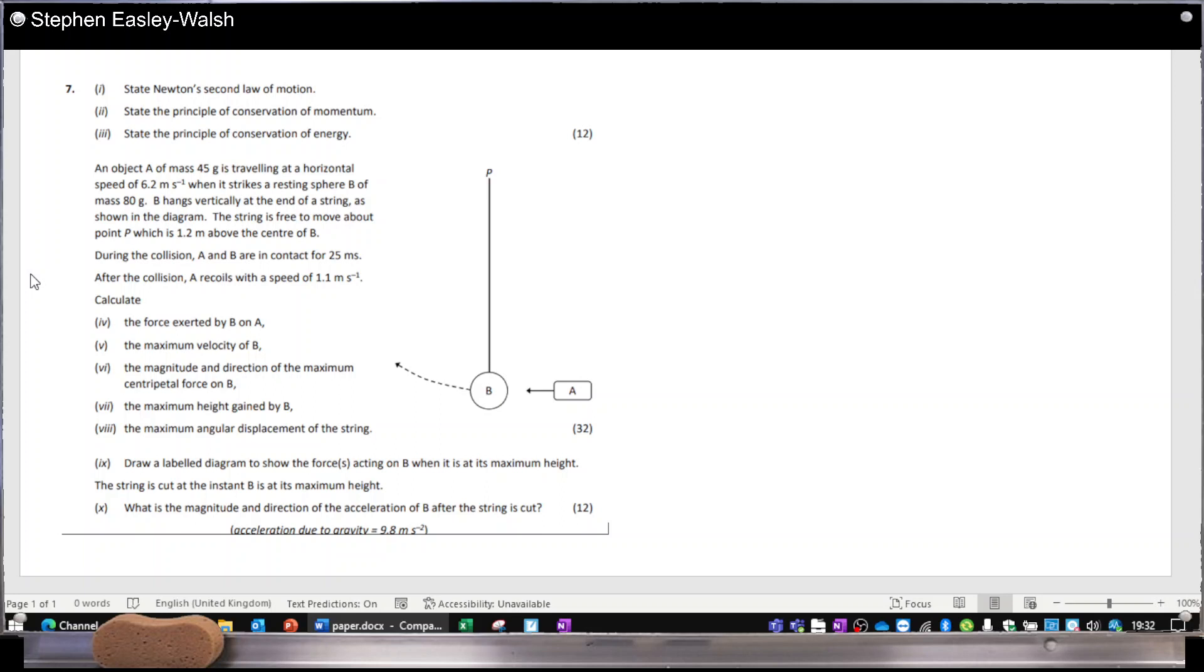And then the third point here is the principle of conservation of energy. So that one is energy cannot be created nor destroyed, it can only be transformed from one form into another. So they're the three basic definitions.